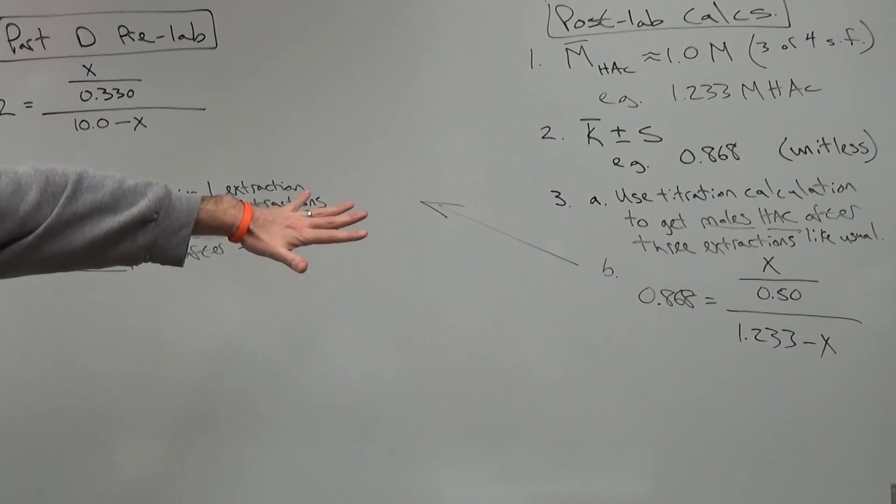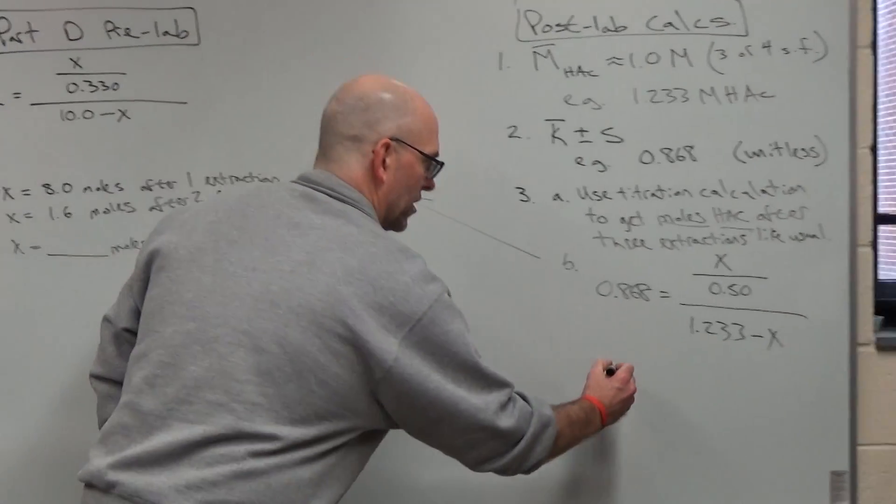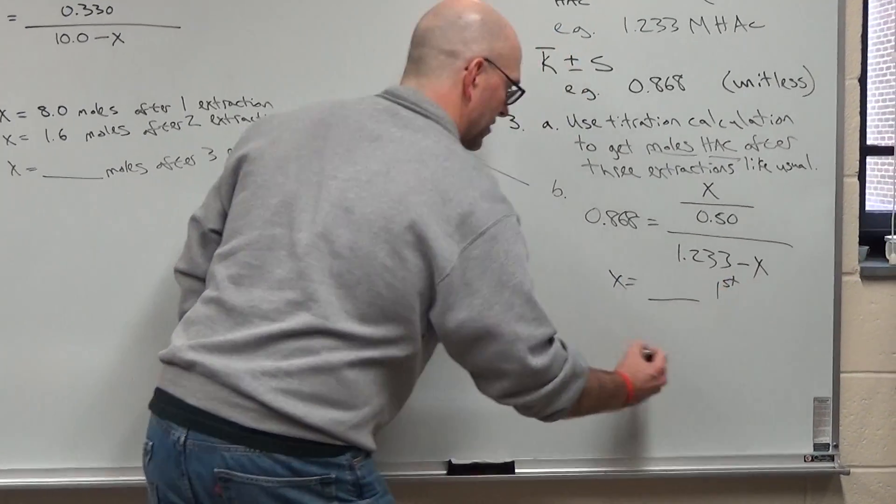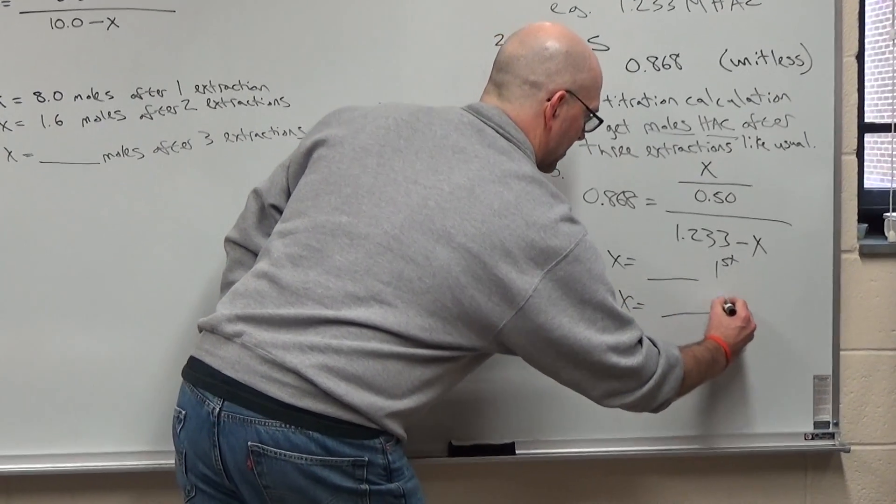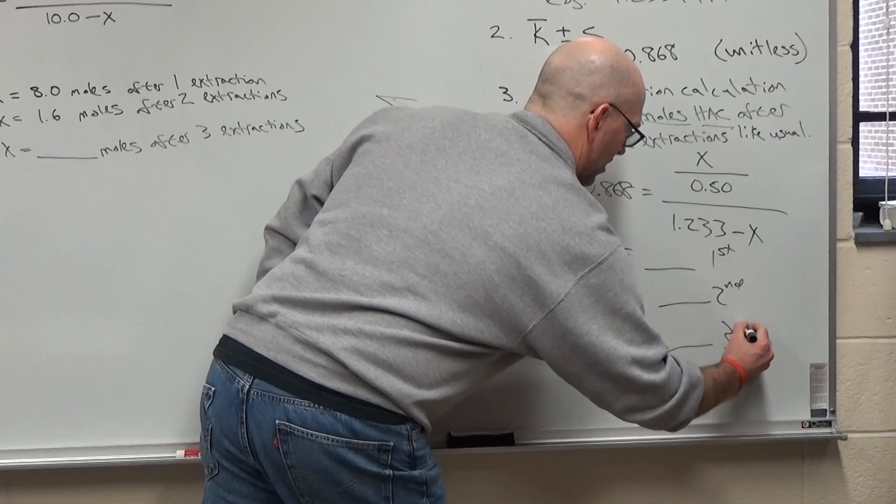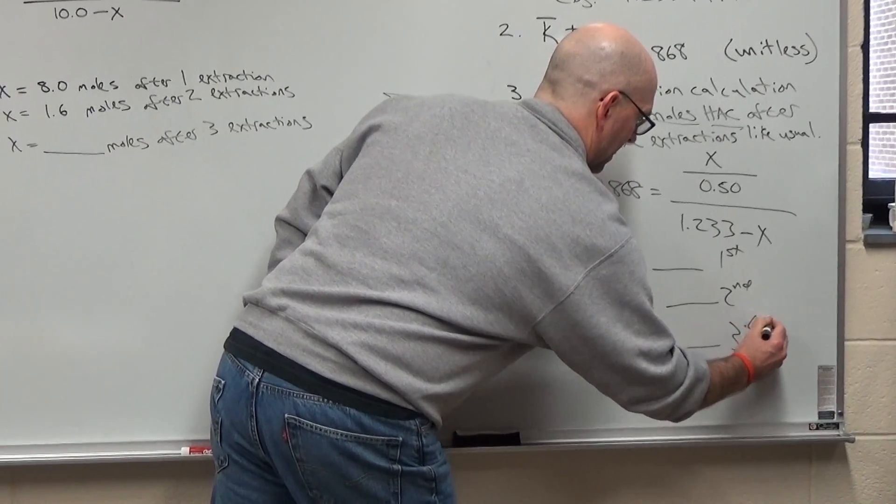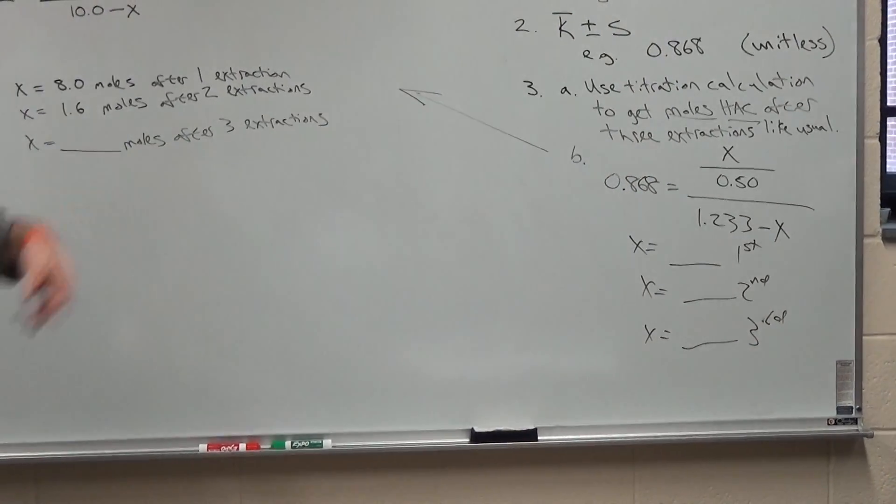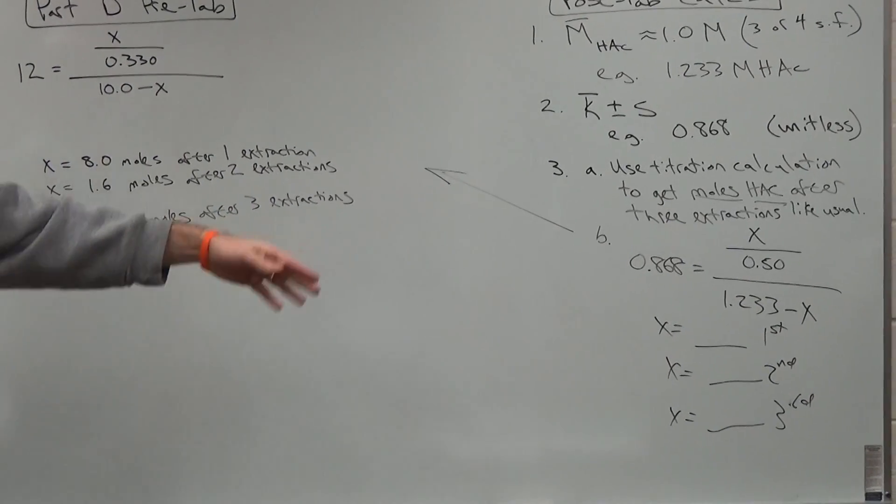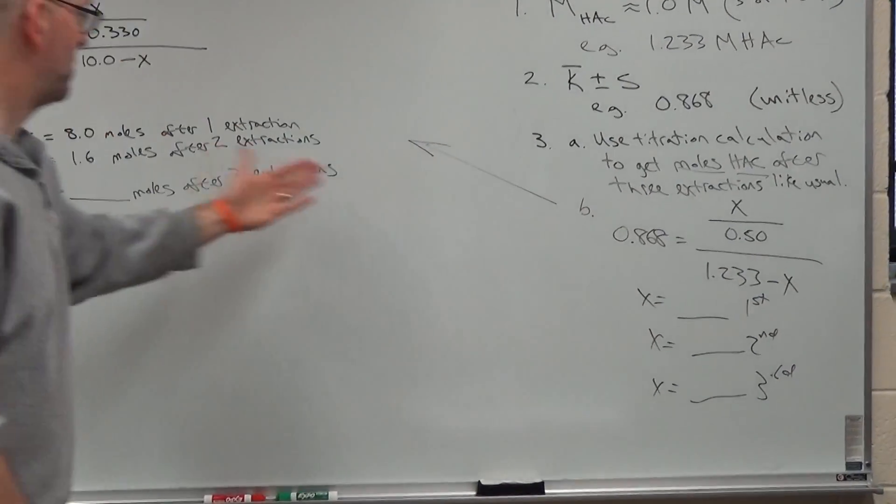Now that's ignoring units, but that's just hacking it down to the basic algebra. So then you do X equals something after the first extraction. X equals something else after the second extraction. X equals something else after the third extraction. So you do that iterative cycle, cyclical calculation three times, and then you'll compare the two.